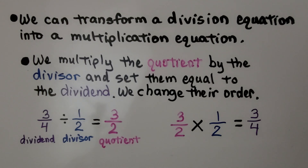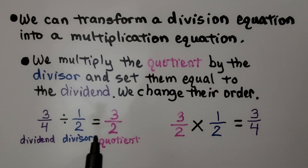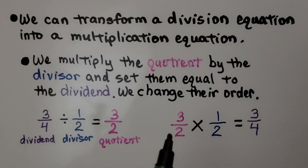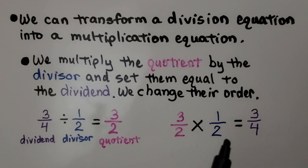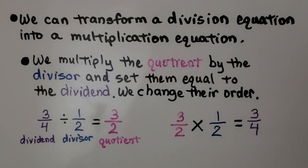We change their order. 3 fourths divided by 1 half is equal to 3 halves, and 3 halves times 1 half is equal to 3 fourths.